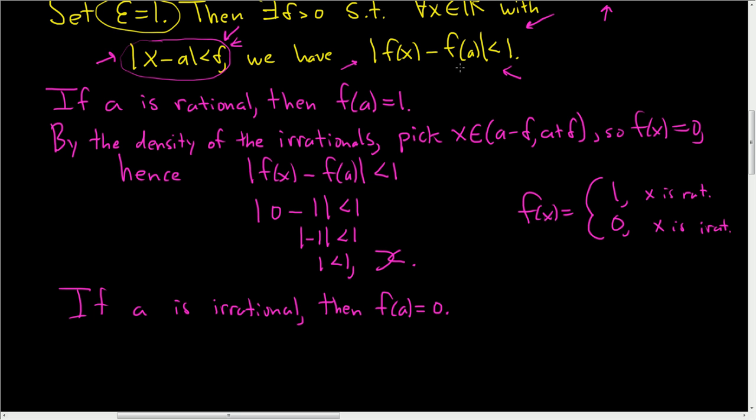So looking at this inequality, if f(a) is 0, we want f(x) to be 1. So then, by the density of the rationals, pick x in this interval that is rational. So we're picking an x that's rational. So that means that f(x) is equal to 1.